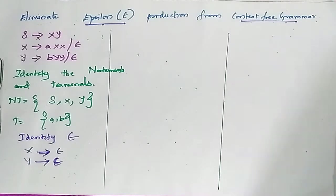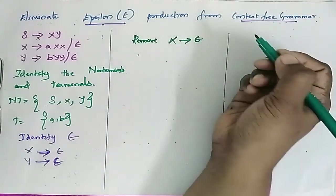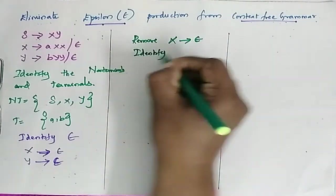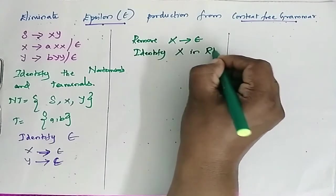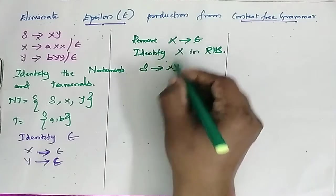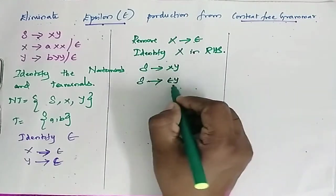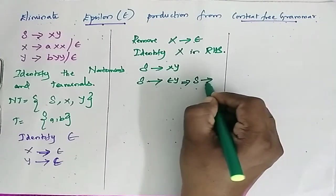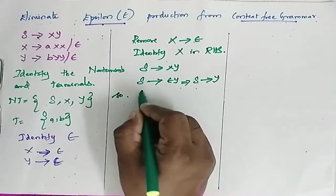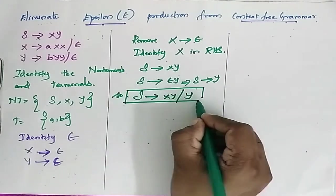First, remove X determines epsilon. Identify X in the right-hand side. S tends to XY, so when we substitute epsilon for X, S determines epsilon Y, which implies S determines Y. So now S becomes XY slash Y.